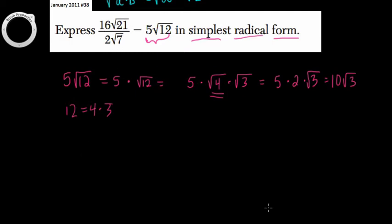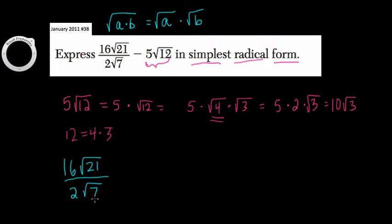In the first expression, we have something different, right? We have 16 times radical 21 over 2 times radical 7. So what can we do with this? Well, a really wonderful way of approaching a problem like this is to recognize that we are just multiplying, and therefore we can just divide out like terms. So 16 divided by 2 is 8, and radical 21 over radical 7, that's just radical 3.